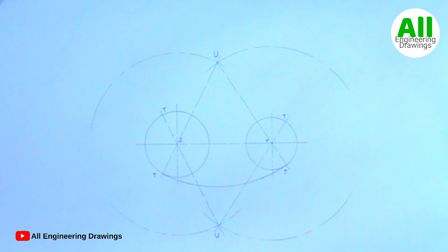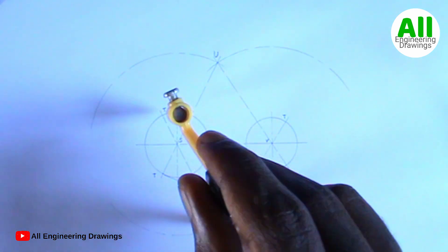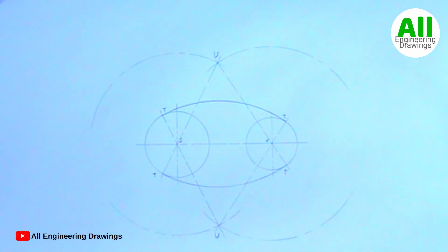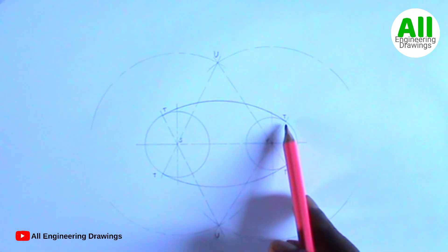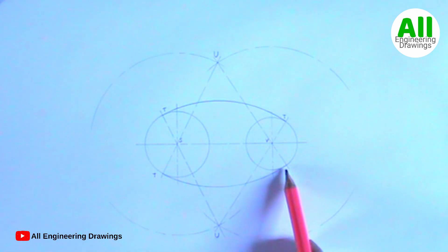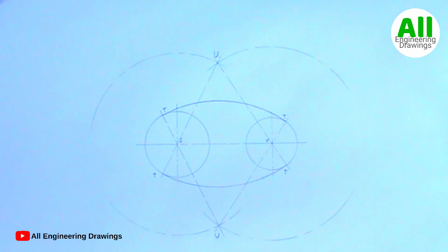I will repeat the same procedure for the lower point of intersection. You can observe that the arc starts from point T at the top and ends at point T at the bottom. And that is it — we are done with the arc. All that is left now is to add dimensional labels to the drawing.